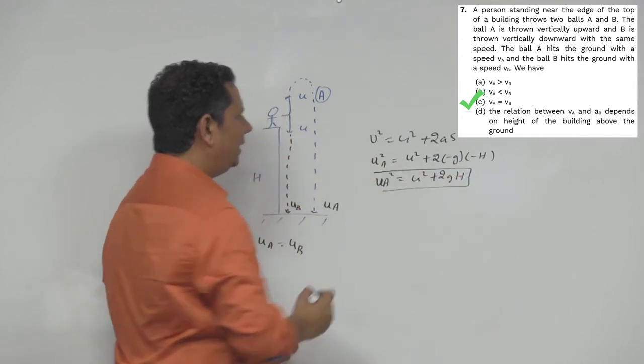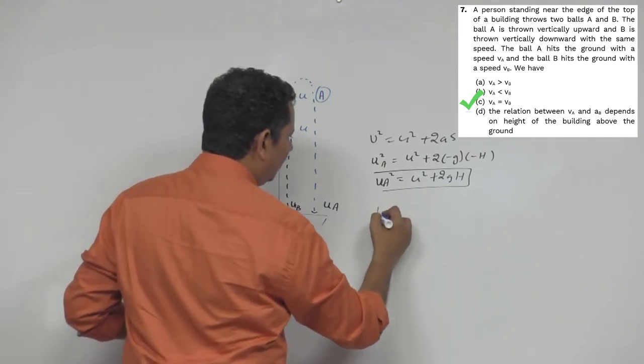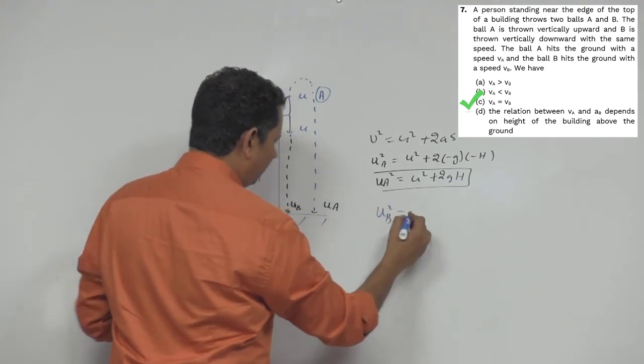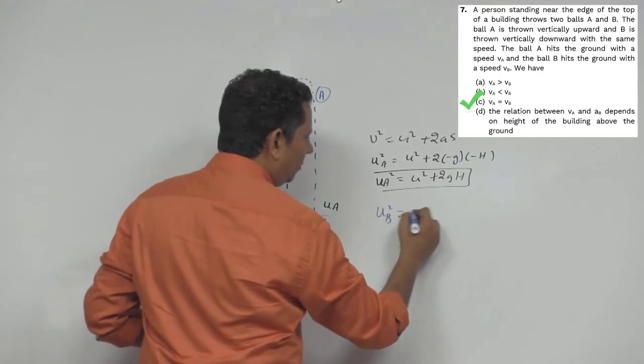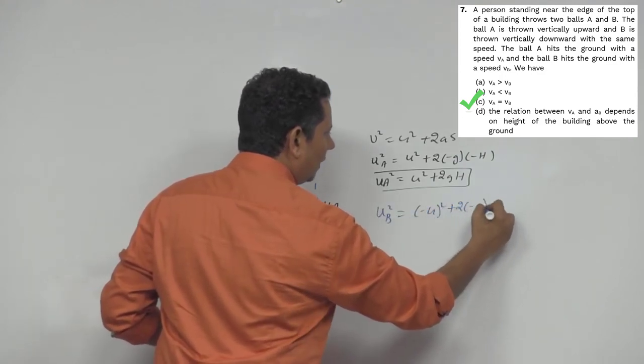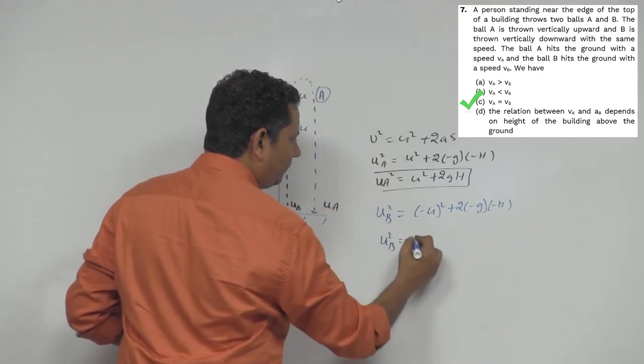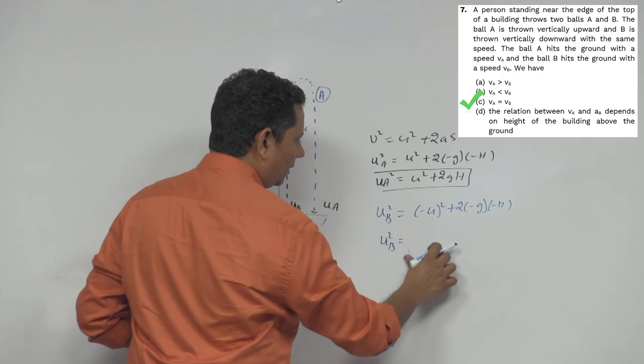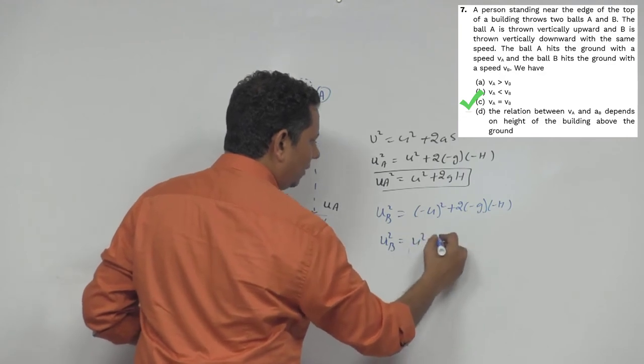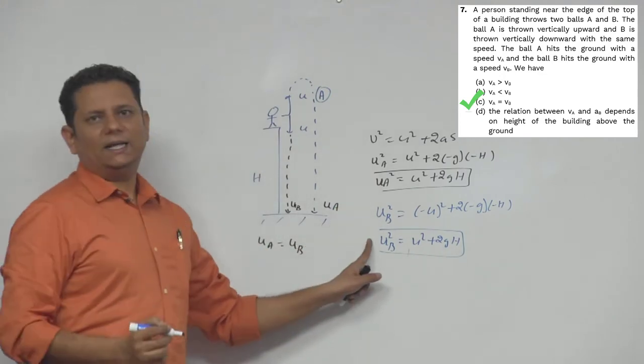Similarly, the value when we calculate for B, the value will be ub square, the final value will be u square plus twice minus g multiplied by minus h, meaning ub square will be equal to u square plus 2gh. So both values come out to be equal.